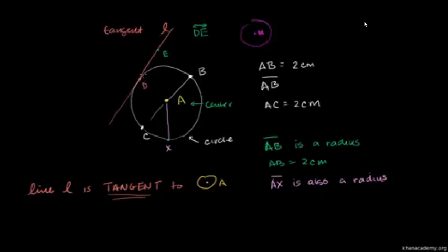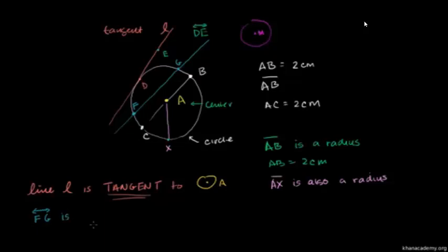Line L is tangent because it only intersects the circle at one point. You could just as easily imagine a line that intersects the circle at two points. We could call that line FG. This line that intersects at two points we call a secant — it is a secant line to this circle, because it intersects it in two points.